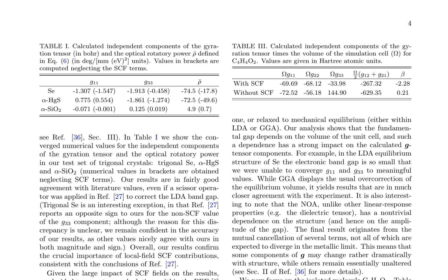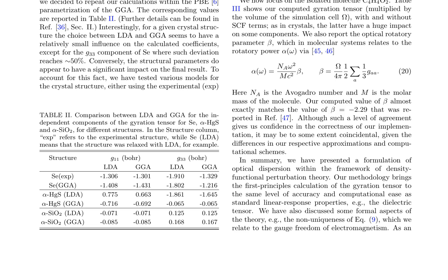A comparison between LDA and GGA parametrizations in Table 2 reveals relatively small influence on the calculated coefficients, except for the G33 component of Se, where the deviation reaches 50%. The authors also investigate the impact of structural parameters on the results, finding a significant effect on the final result. They then focus on the isolated molecule C4H4O2, presenting the computed gyration tensor and optical rotatory parameter in Table 3. The results show a significant impact of SCF terms on some components, and the computed optical rotatory parameter agrees well with a previously reported value.